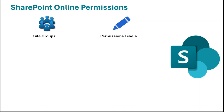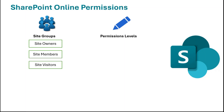When we create a SharePoint site, be it a team site or a communication site, by default we get three site groups: site owners, site members, and site visitors. These groups are used to categorize users. A site owner has full control over the site — he can modify the site, modify the site content, manage permissions, and delete the site.